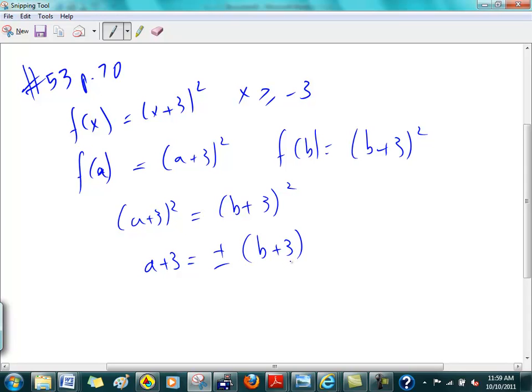So, if you go with a plus sign, then you get a equals b. Okay, Sona and Mariam, you need to be working. If you go with a minus sign, then it becomes a plus 3 equals minus b minus 3. Is everybody with me on that? And then you get a plus b equals negative 6. Okay? So, you've got two possible answers here. Except, you've got this condition here. Okay? Both a and b have to be greater than negative 3.